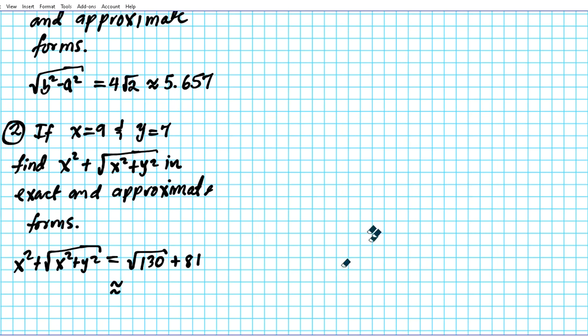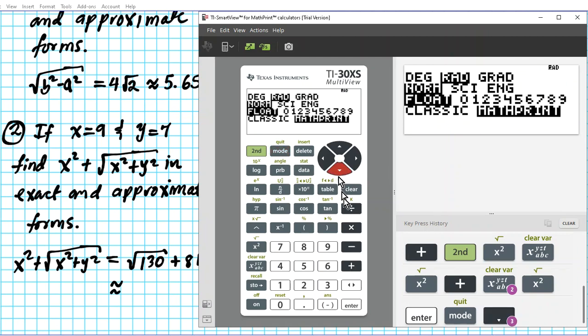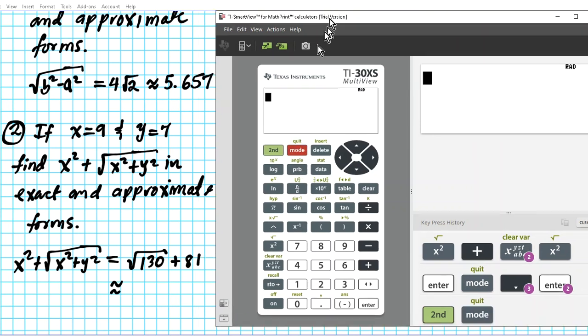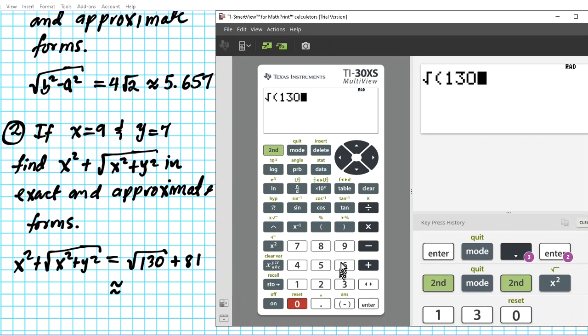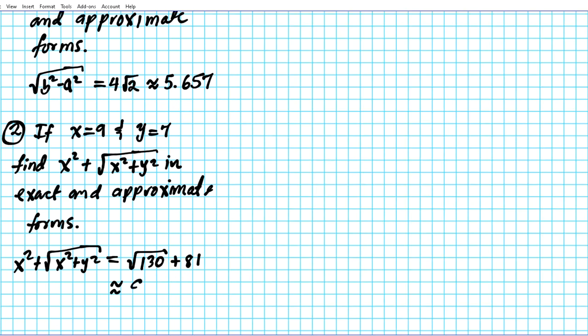How about the approximate form? Let's look at the approximate form. So for the approximate form, I'm going to press mode and go to classic. Okay. Enter, enter, quit that window. And let me enter the answer I entered before, which is root 130 plus 81. That's just a shortcut. I don't want to do the whole thing again. So root 130 plus close the parentheses plus 81. Enter. It gives us the answer in approximate form. So 92.402 to three decimal places. And there you have it.